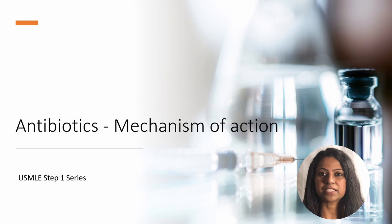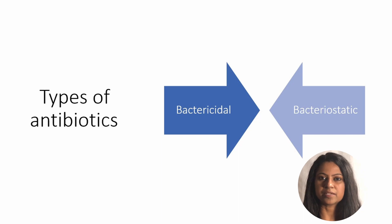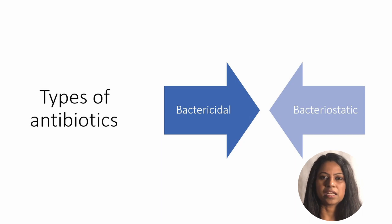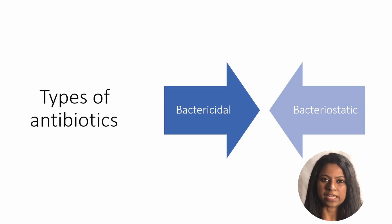Antibiotics may be bacteriostatic or bactericidal. Bactericidal antibiotics are able to kill the bacteria and they are used in very specific situations like endocarditis, life-threatening infections, and infections in immunocompromised hosts. On the other hand, bacteriostatic antibiotics are able to inhibit the growth of bacteria without killing them.